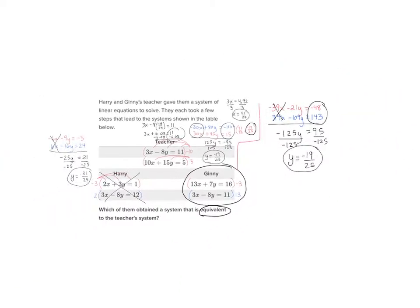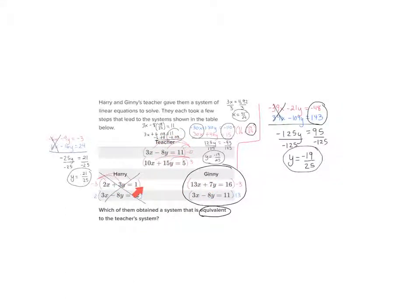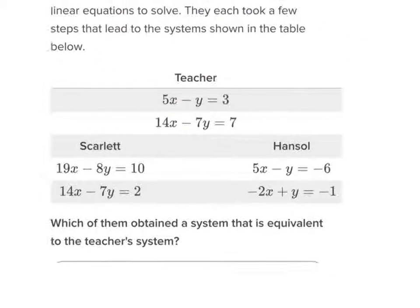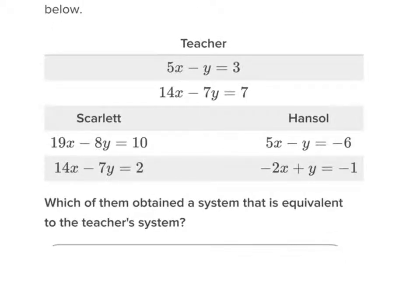Let's review: if you're trying to tell if two systems are equivalent, you have to solve the teacher's and then solve both students' systems. The ones that have the same solution as the teacher's are equivalent. Now let's look at this next one — same scenario. You've got a teacher's equation, Scarlett's equation, and Hansel's equation. We want to know which of these two people are equivalent to the teacher. It could be both.